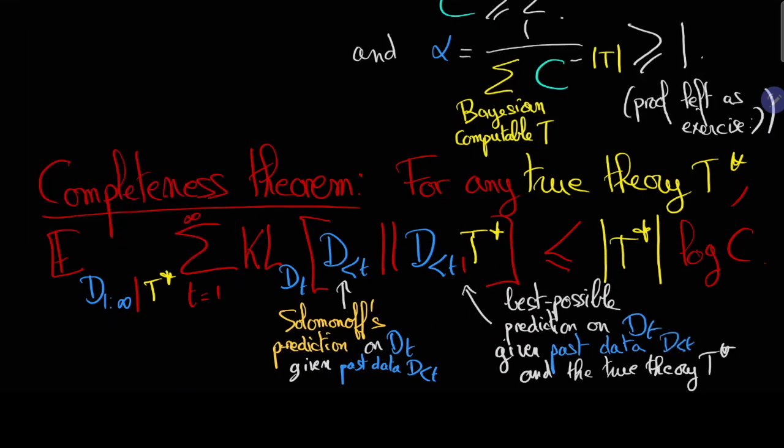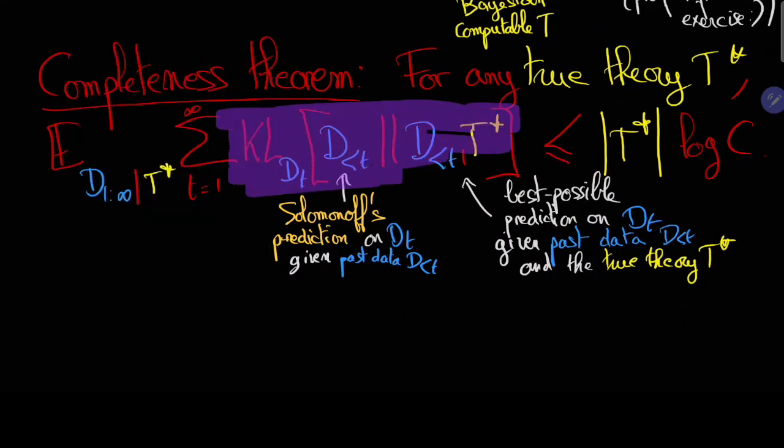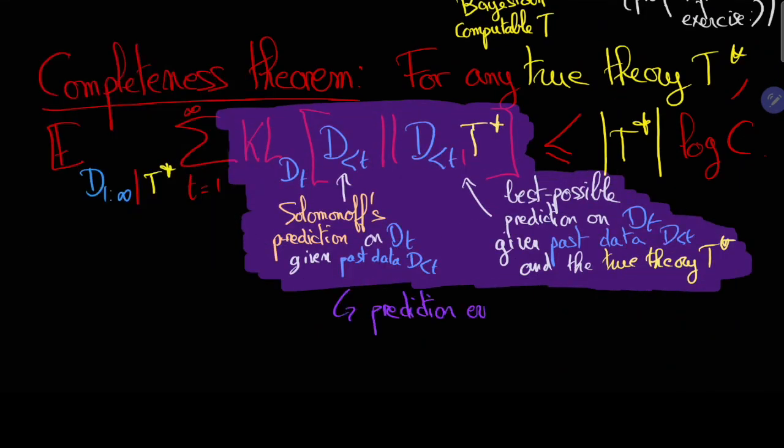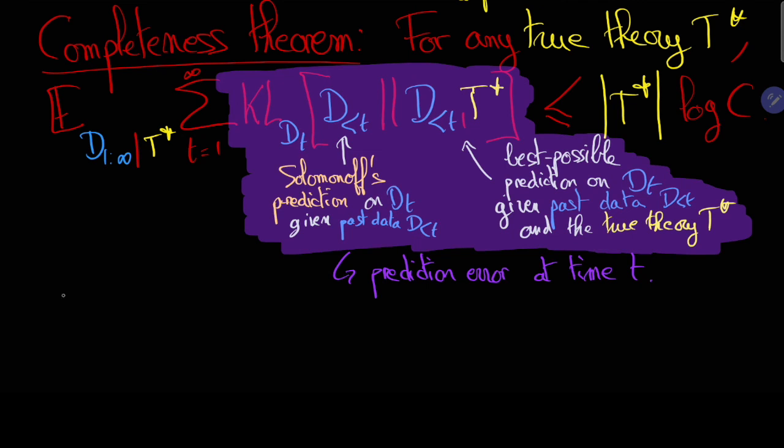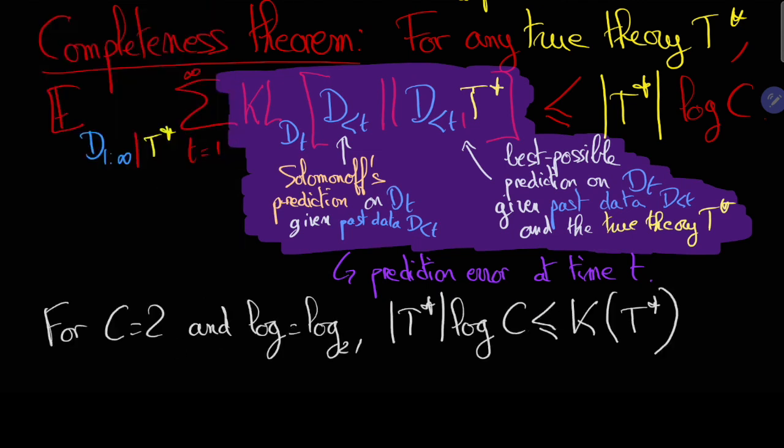I argued that this is absolutely remarkable because in a sense it means that whoever computes Solomonoff's equations, let's assume it's someone I call Solomonoff's demon, then Solomonoff's demon is going to get it right and it's going to get it right very quickly.